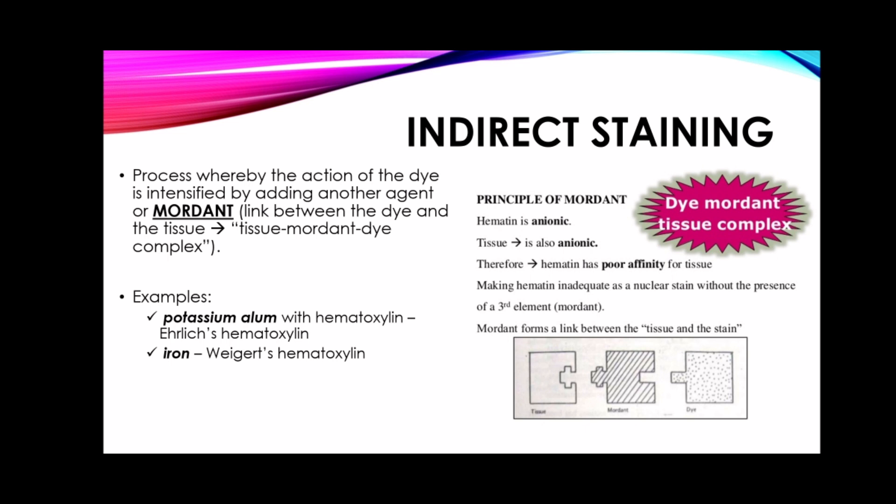A mordant may be applied to the tissue before the stain, or it may be included as part of the staining technique, or it may be added to the dye solution itself. Examples of mordants are potassium alum with hematoxylin in Ehrlich's hematoxylin, and iron in Weigert's hematoxylin.